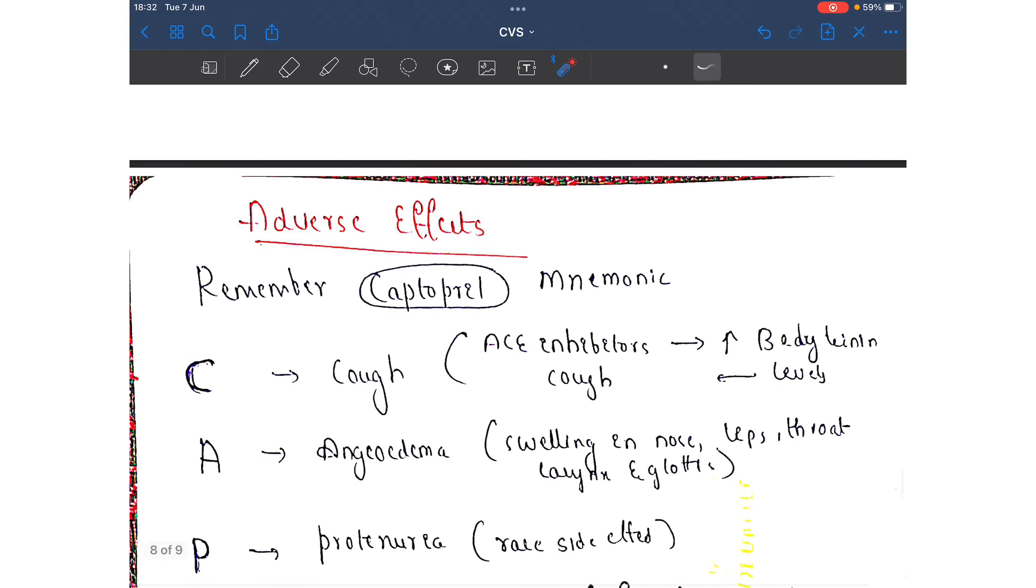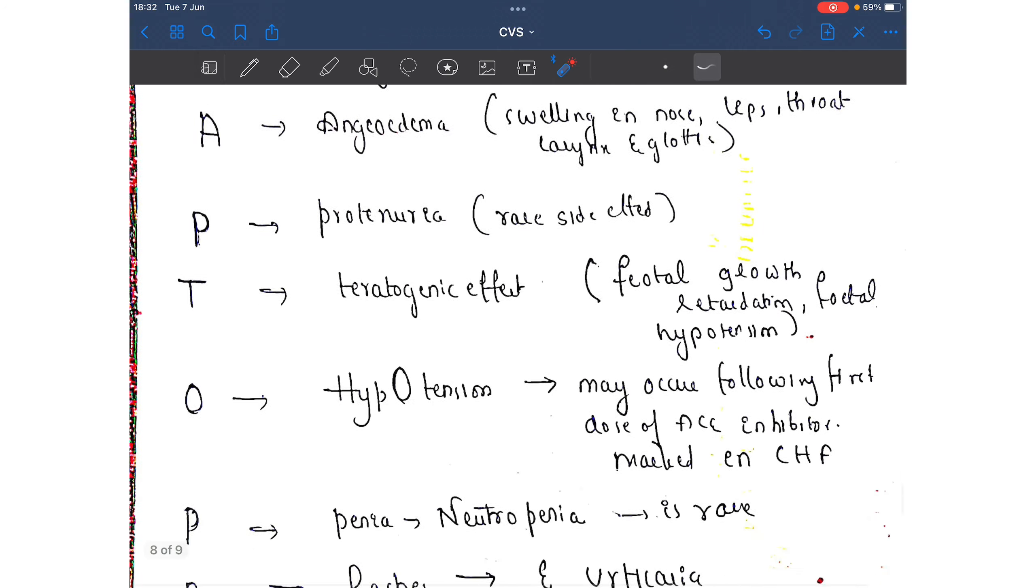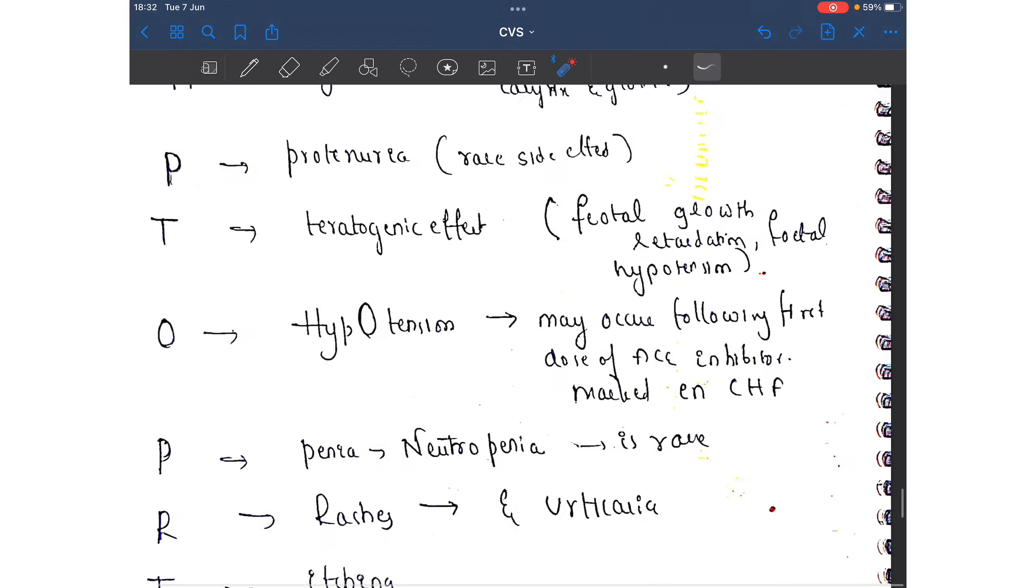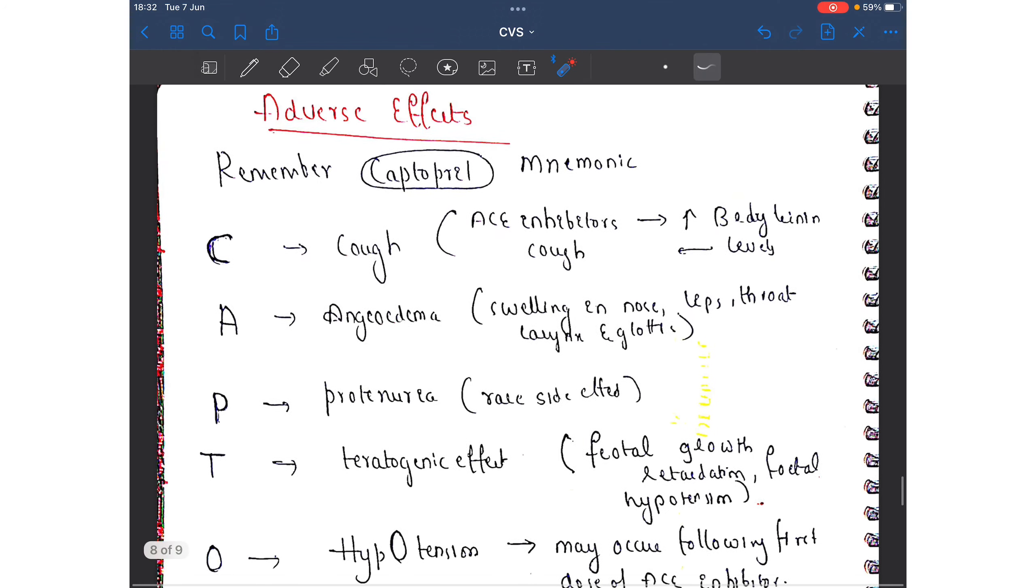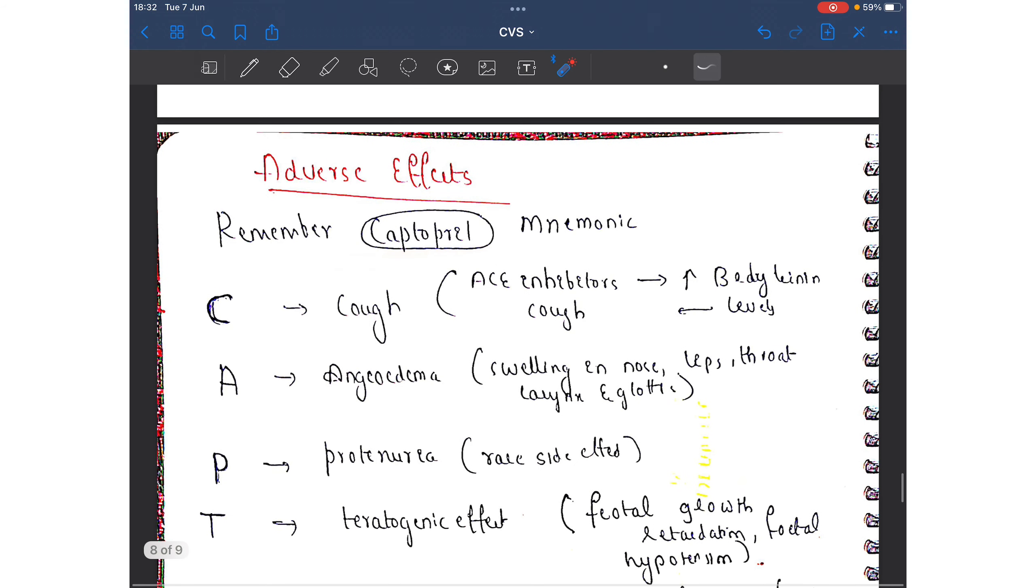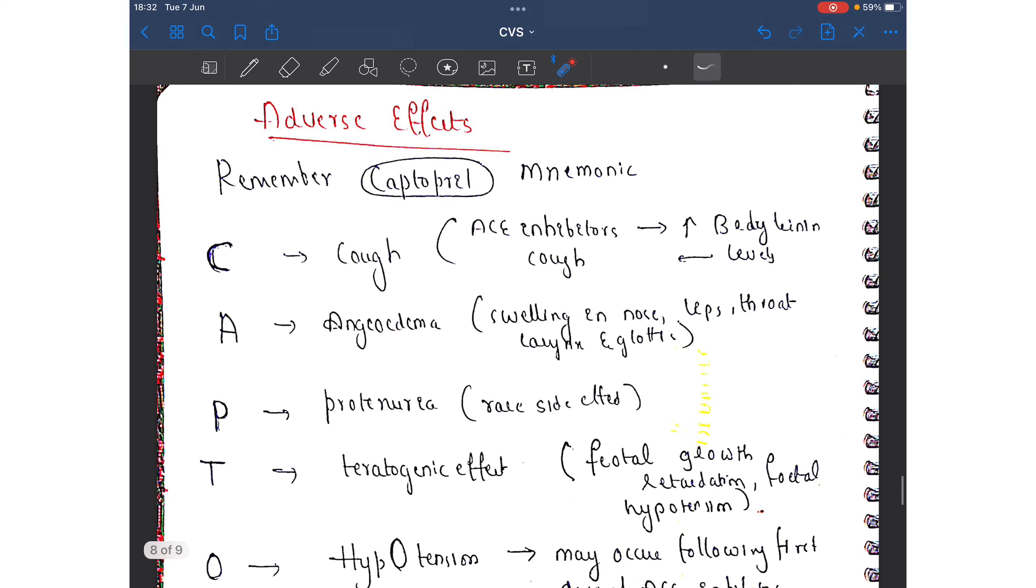Next, you have to mention about the adverse effects. There is actually a short trick to remember the adverse effects. You can remember it by the drug name CAPTOPRIL. C stands for cough. ACE inhibitors induce cough because of increased bradykinin levels in the body.